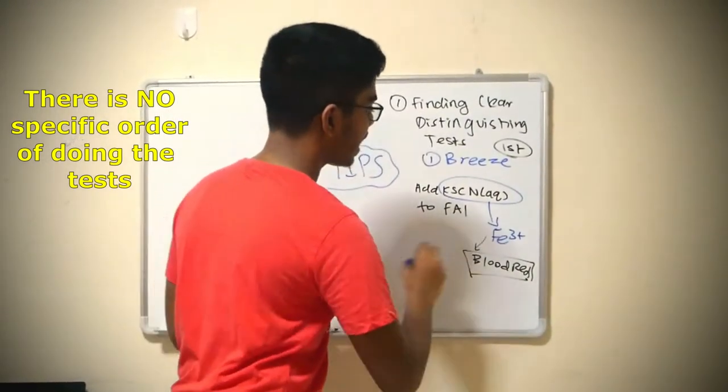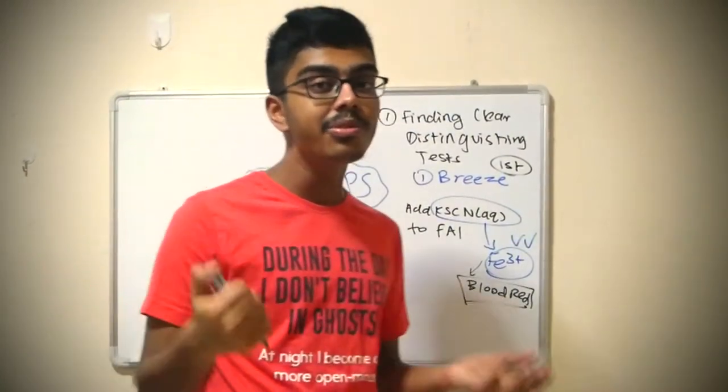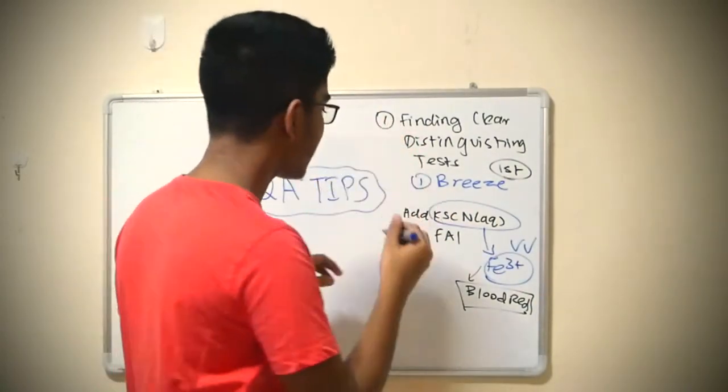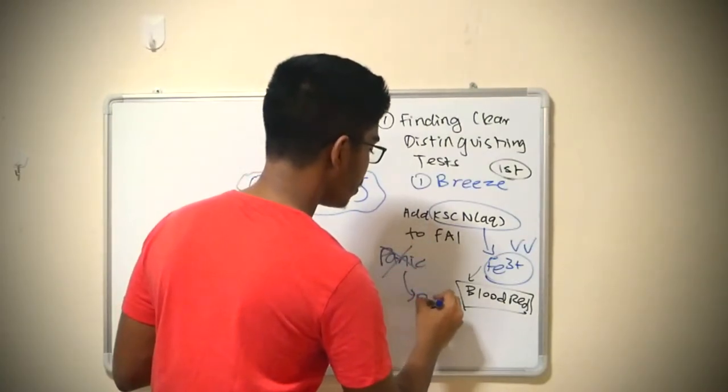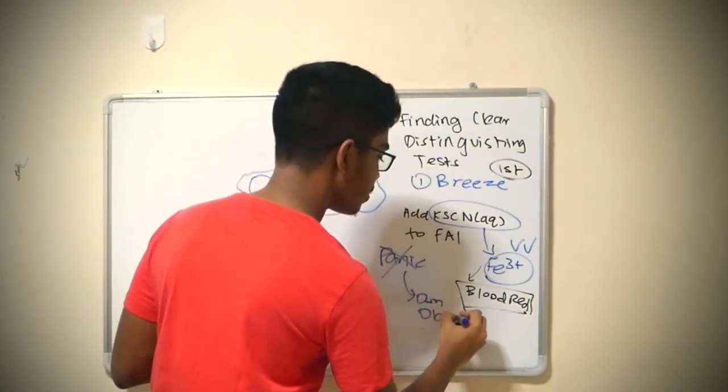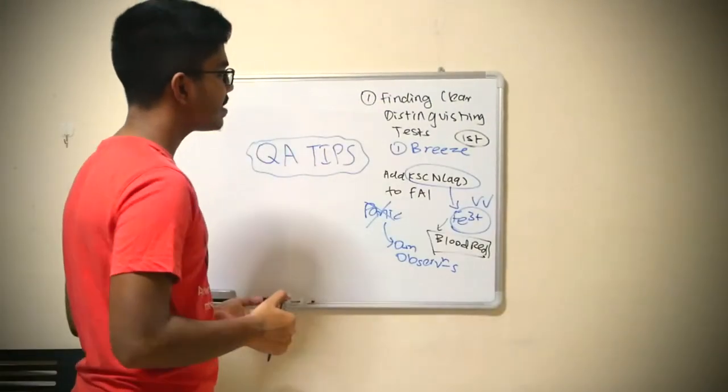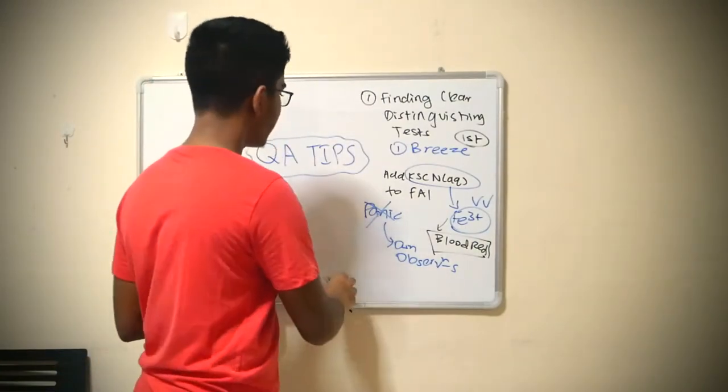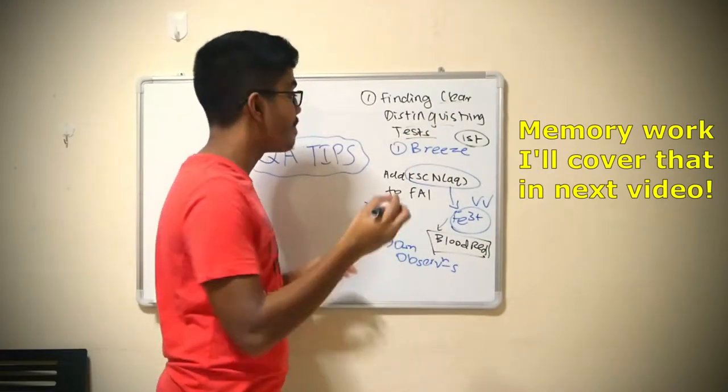And once you know that, you know what's the greatest advantage? You don't have to panic about the observations in the other tests. There's no more panic because you can write out your own observations because you know what ion is present already. That's why I find this trick really helpful. But the only probable drawback is that these ones usually require a bit of memory work.